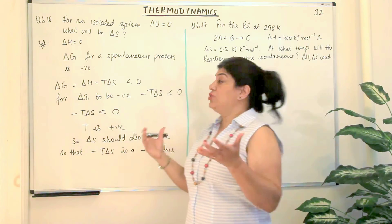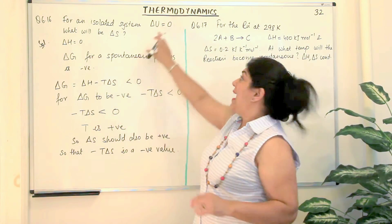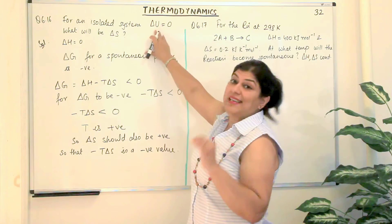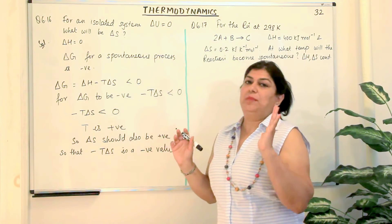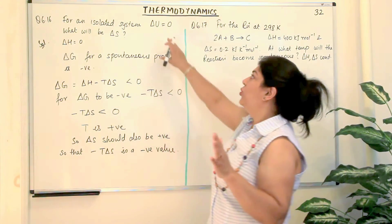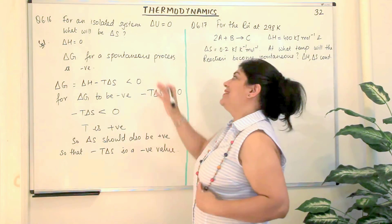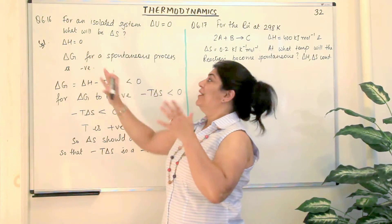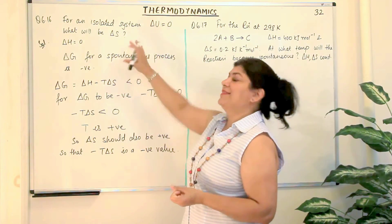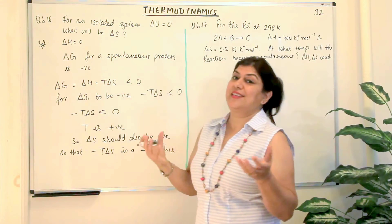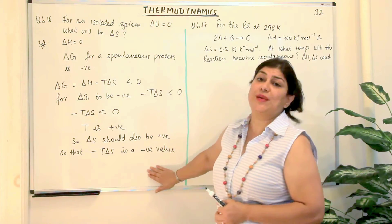We are assuming the process to be spontaneous because we have been told that the system is isolated and the internal energy change is zero. A change is occurring even though internal energy did not change, and since it is an isolated system, delta H is also zero. Therefore, delta S must be positive. So this was question 16.